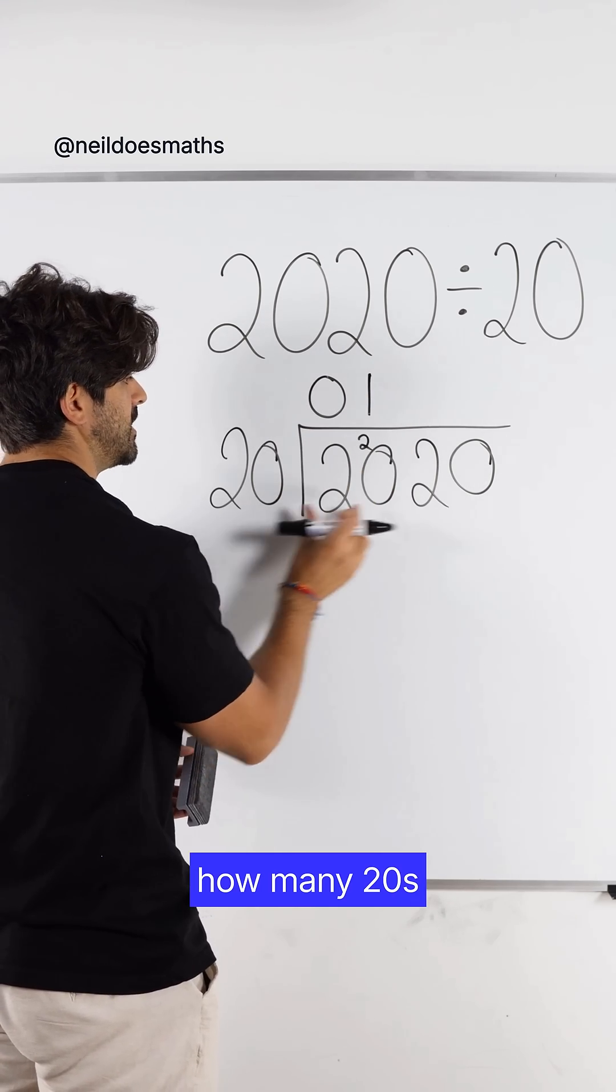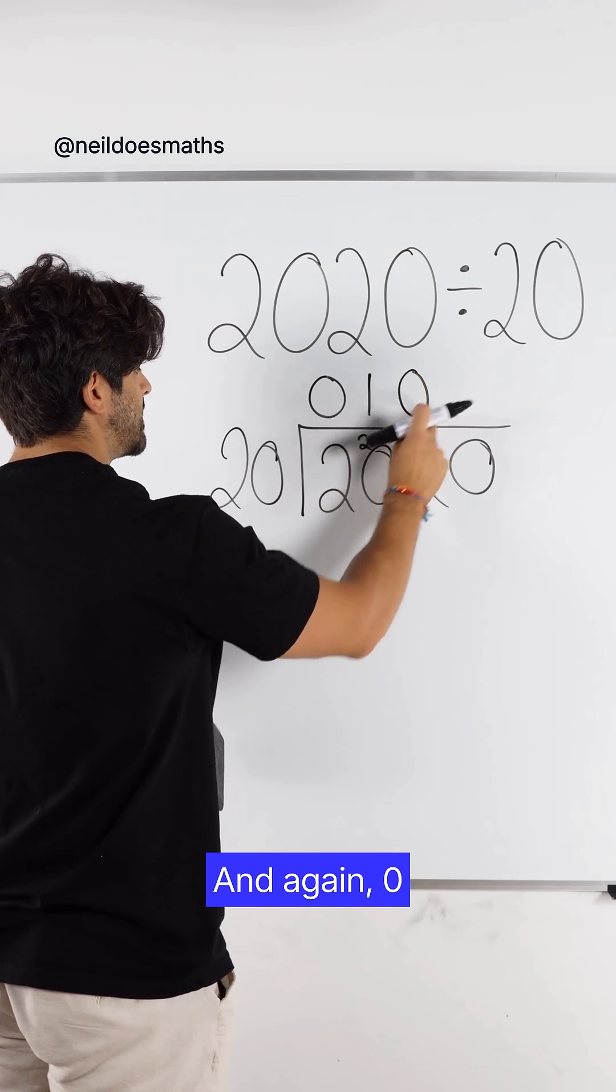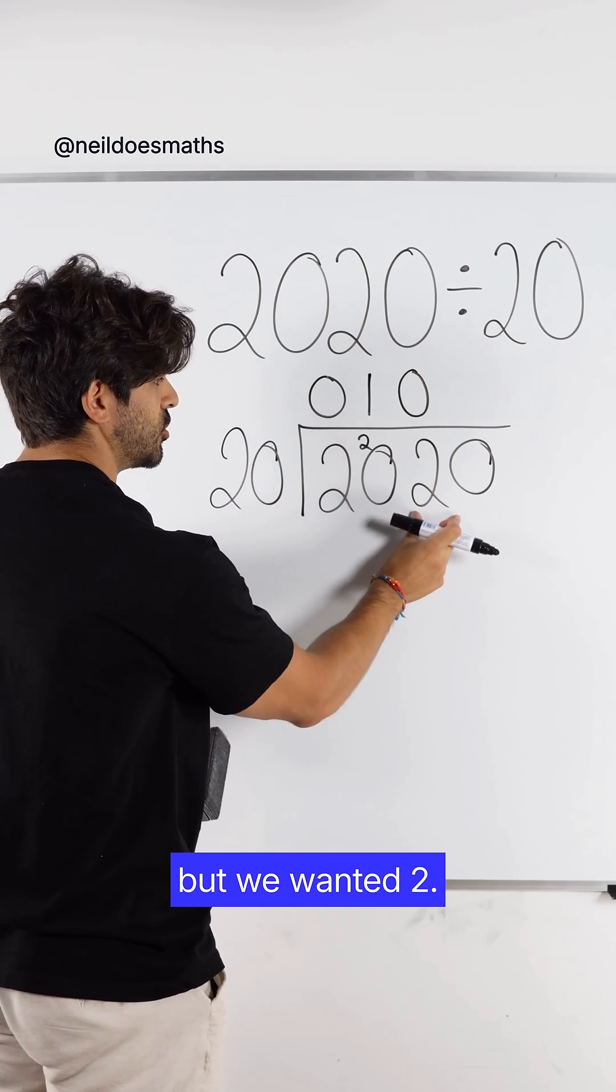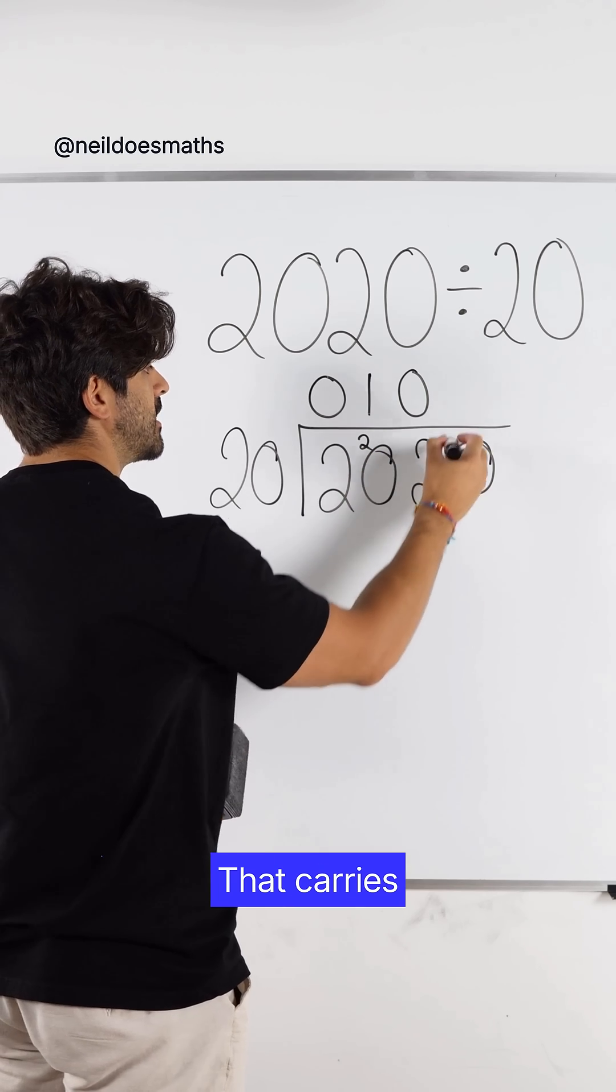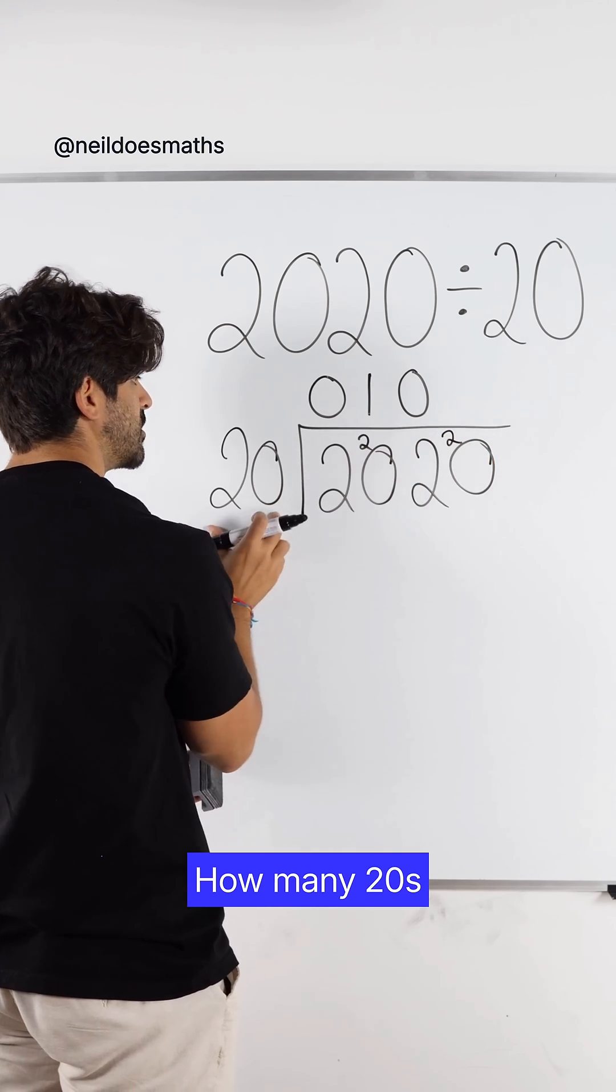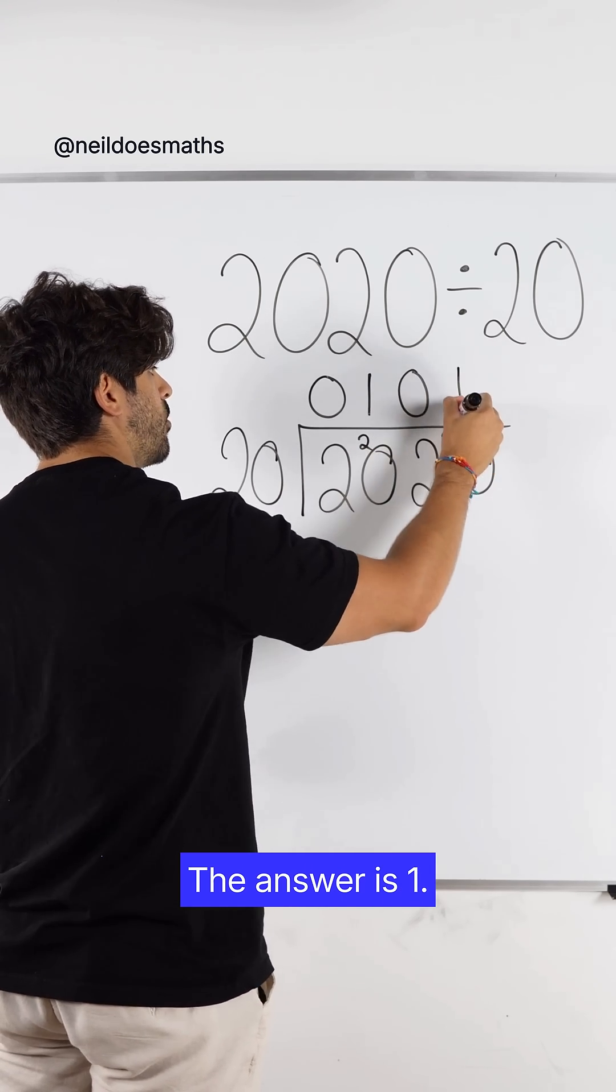Then we say how many 20s go into 2? The answer is 0. And again, 0 times 20 is 0, but we wanted 2. So the remainder is 2. That carries over to the next number. How many 20s go into 20? The answer is 1.